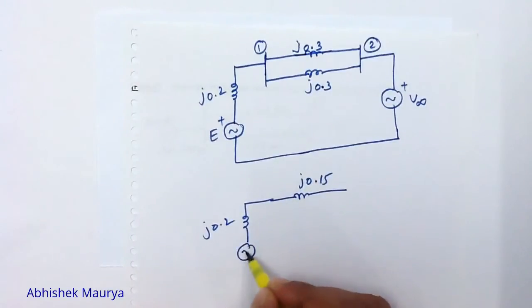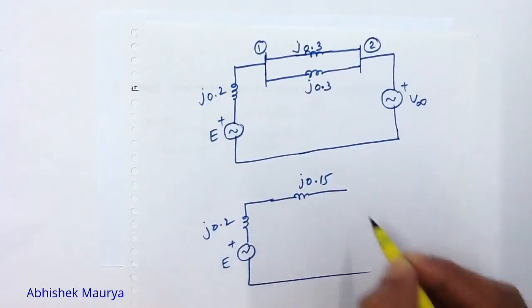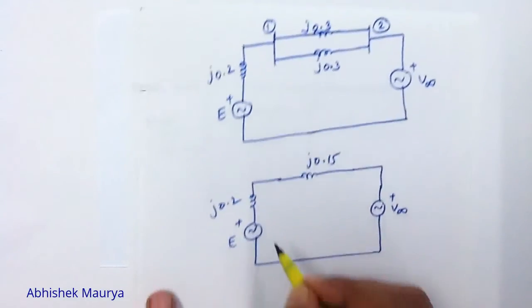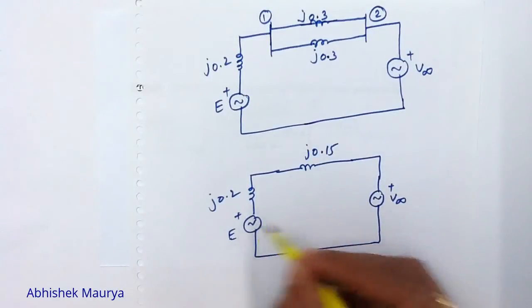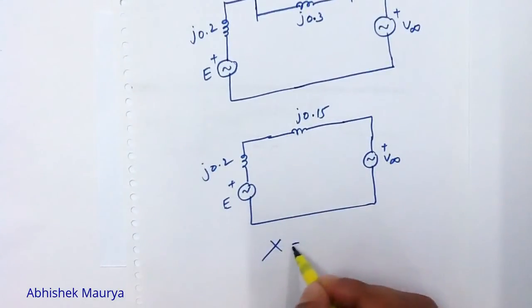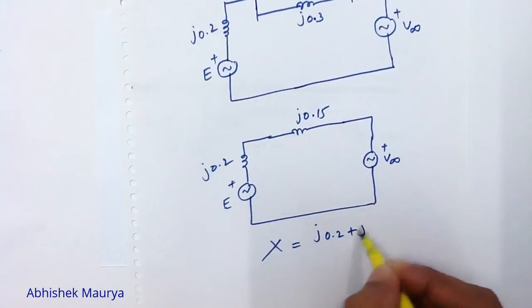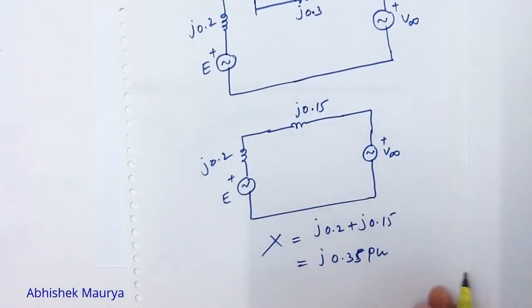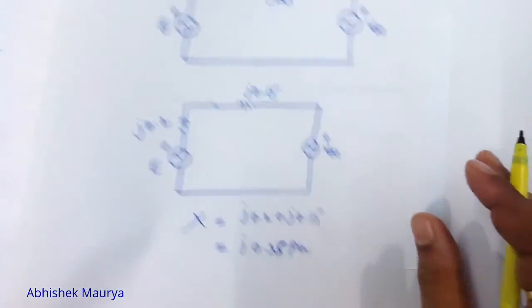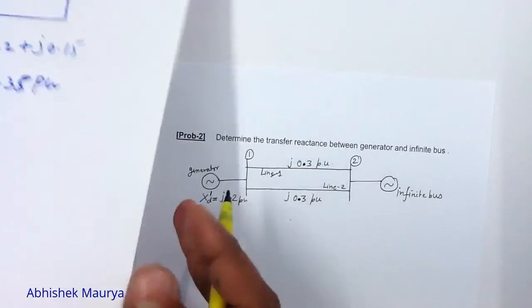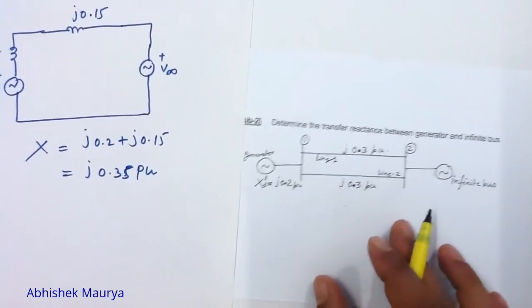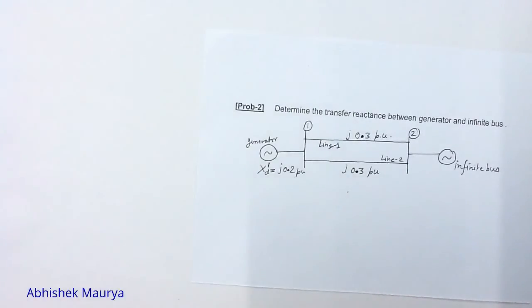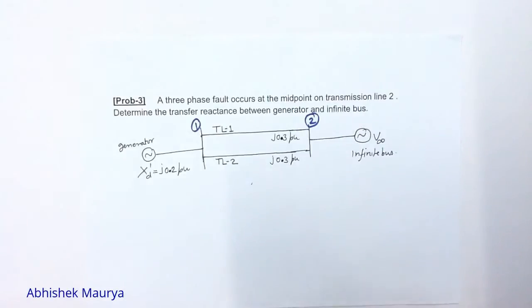The generator reactance is J0.2 and the parallel combination of the two transmission lines is J0.15. The net reactance between E and V infinity is J0.2 plus J0.15, which equals J0.35 per unit. So the transfer reactance for this power system network between the generator and infinite bus is J0.35 per unit.